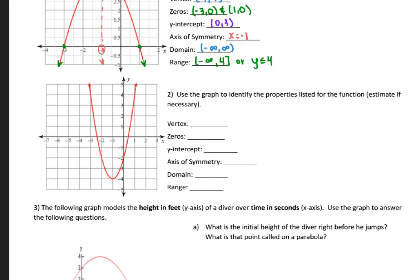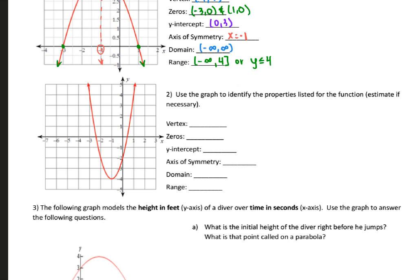The second problem, same idea. Starting with the vertex, in this case it's an absolute minimum. The coordinates are going to be negative 1, negative 4. Zeros are my x-intercepts, so it has two x-intercepts — it looks like negative 2.5 comma 0, and the other one's going to be 0.5 comma 0. My y-intercept is where it crosses the y-axis, so it crosses at negative 2, which means my y-intercept is going to be 0, negative 2.